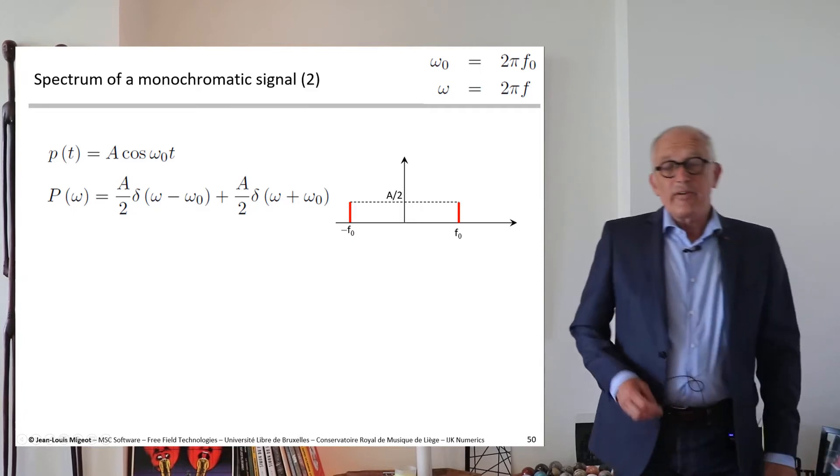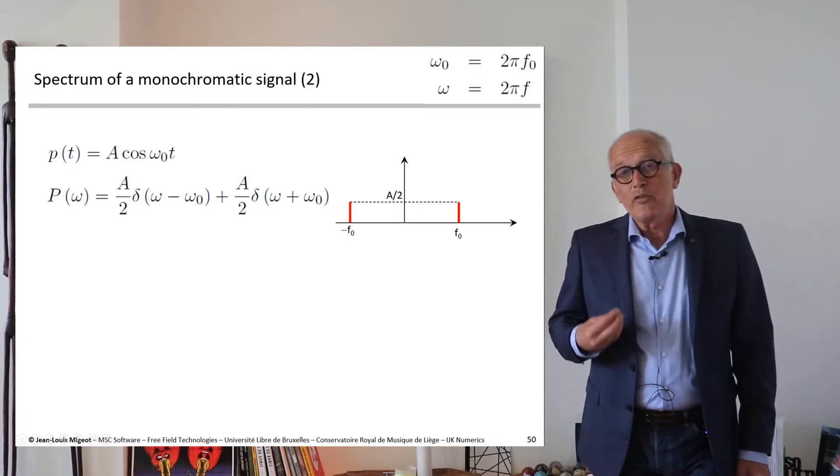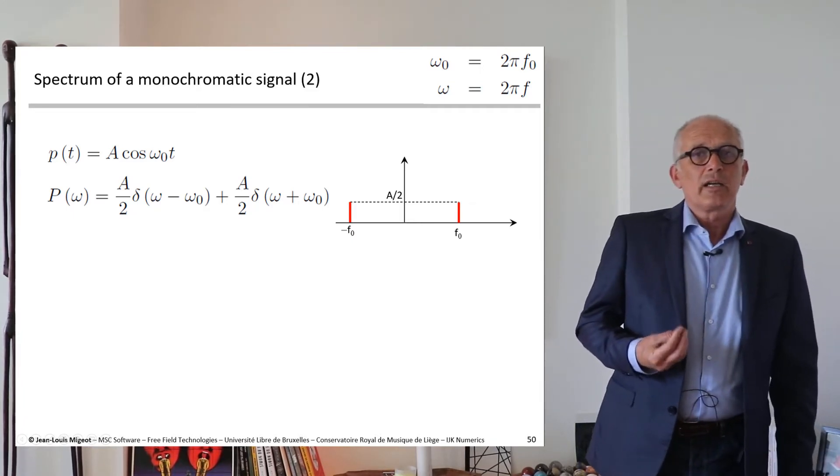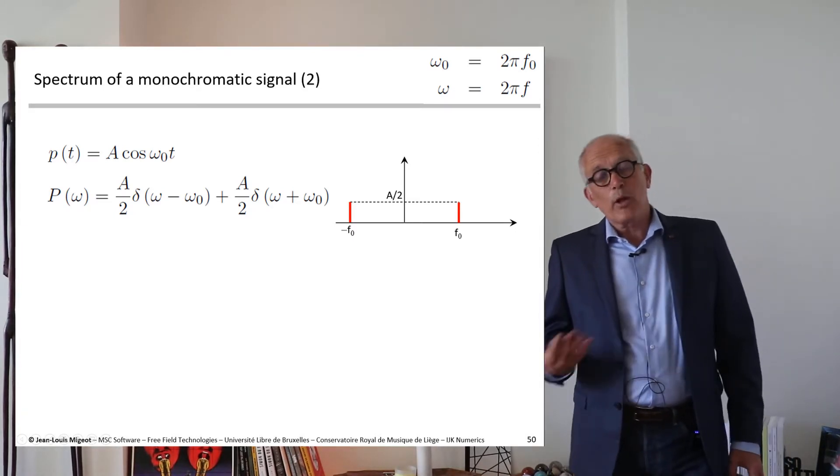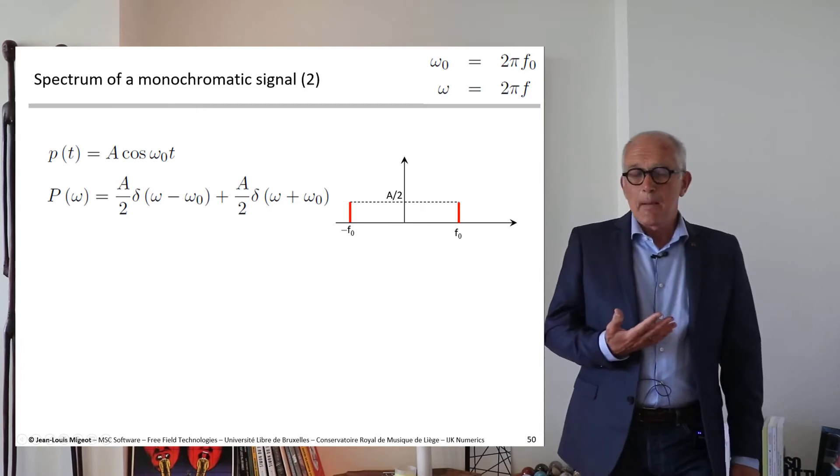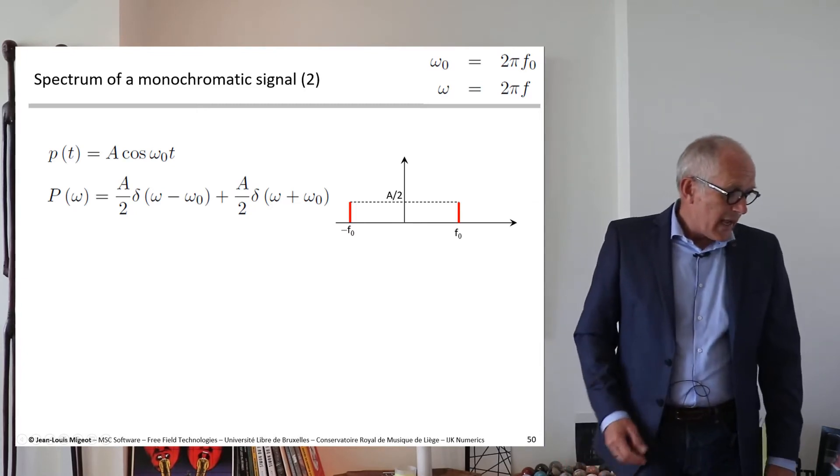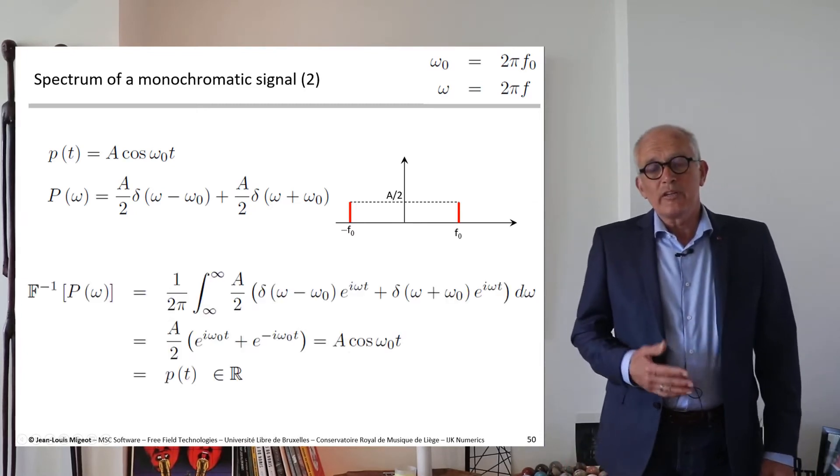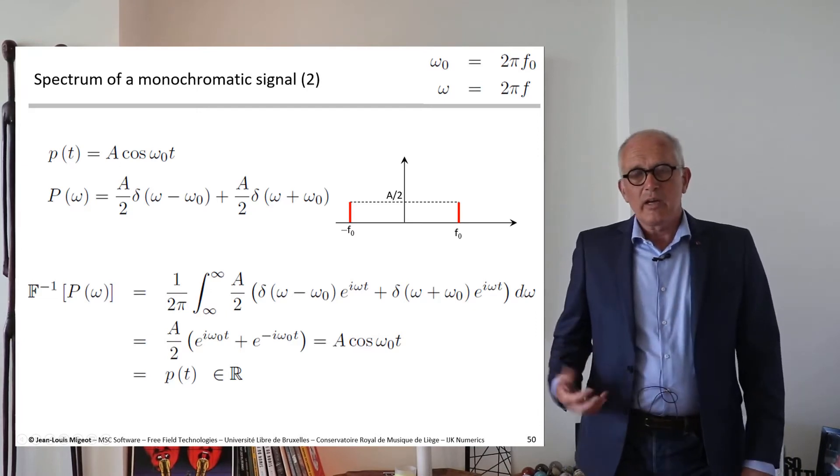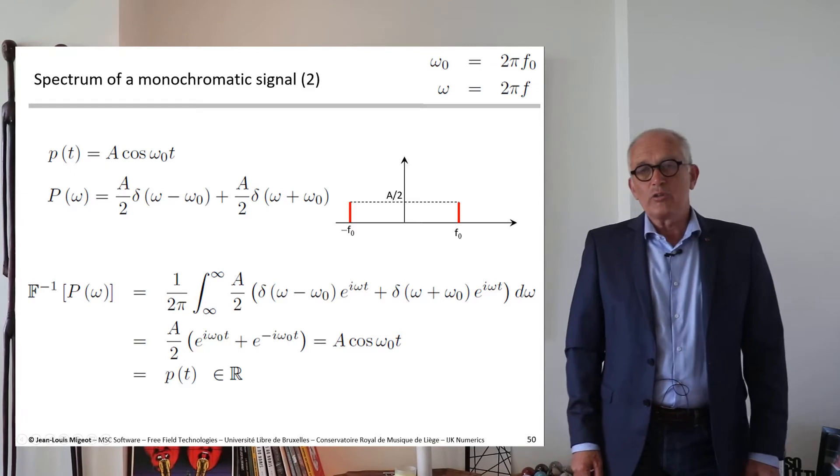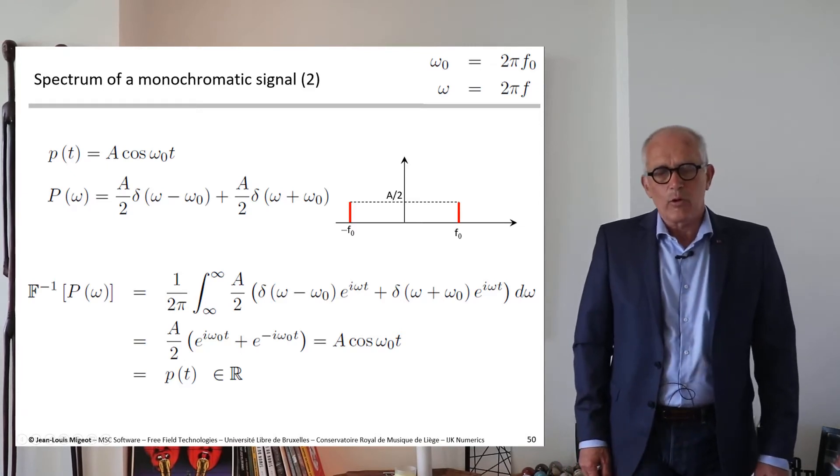Now in fact the signal does not contain a single spectral line, it contains two spectral lines at the frequency plus f0 and minus f0. And indeed now if we take the inverse Fourier transform of that spectrum, we indeed come back to the original signal and we indeed have a real signal.